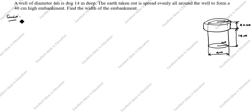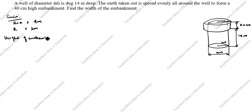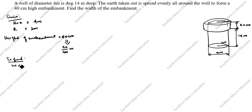Given data: diameter of well equals 4 meter, radius equals 2 meter. Next, the height of embankment is given as 40 centimeter. We need to change this into meters since all other values are in meters. So 40 centimeter equals 40 divided by 100 meter, which is 0.4 meter. We need to find the width of the embankment.